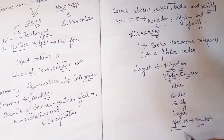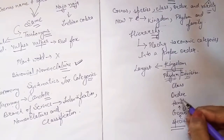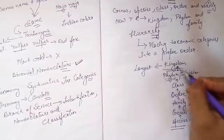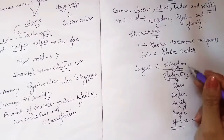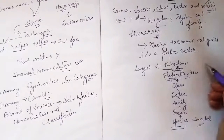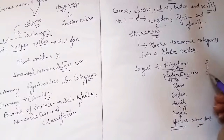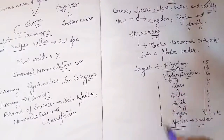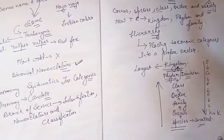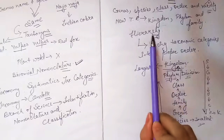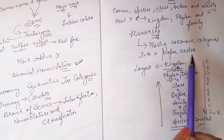These categories must be placed in this order only; you cannot rearrange them. However, you can write them in ascending or descending order. Many species combine to form a genus, genera combine to form a family, families form an order, orders form a class, then phylum, then kingdom — this is ascending order. If you put species at the top, then genus, family, order, class, phylum, and kingdom, that is descending order.